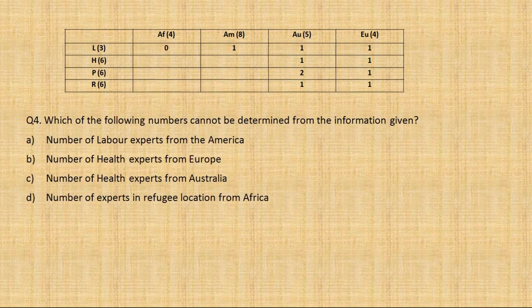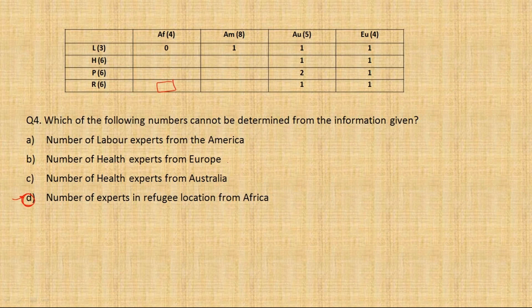Question 4: Which of the following numbers cannot be determined? Starting with the fourth option: the number of experts in refugee from Africa - yes, this cannot be determined as we showed it could be 1 or 2. The other options involve Europe, Australia, or the labor row - all of which are fully filled in. The only indeterminate value is Africa's refugee count, so the fourth option is the answer.